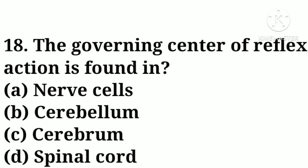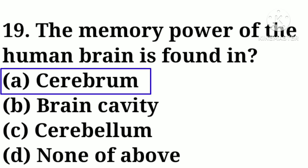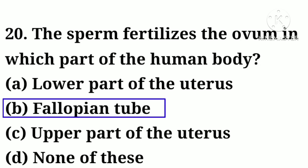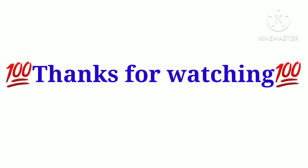Question number eighteen: the governing center of reflex action is found in — option A: nerve cells, option B: cerebellum, option C: cerebrum, option D: spinal cord. Correct answer: option D, spinal cord. Question number nineteen: the memory power of the human brain is found in — option A: cerebrum, option B: brain cavity, option C: cerebellum, option D: none of the above. Correct answer: option A, cerebrum. Question number twenty: the sperm fertilizes the ovum in which part of the human body — option A: lower part of the uterus, option B: fallopian tube, option C: upper part of the uterus, option D: none of these. Correct answer: option B, fallopian tube. Thanks for watching — like, share, and subscribe.